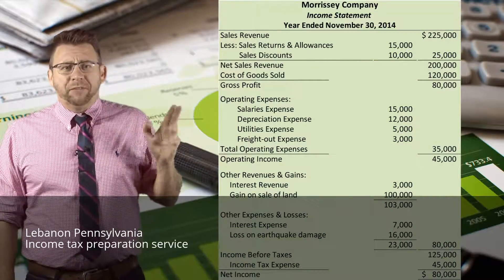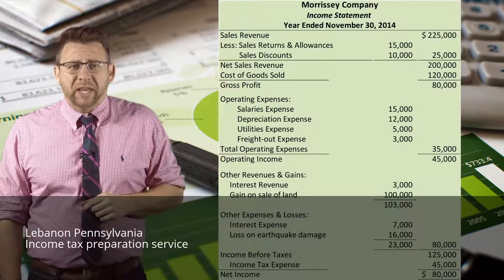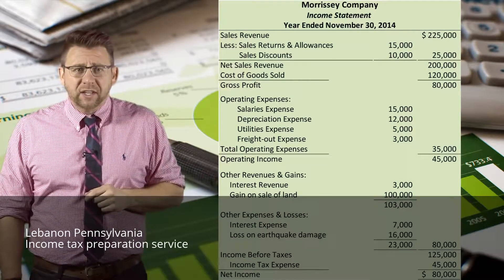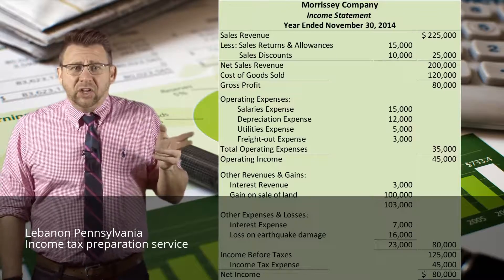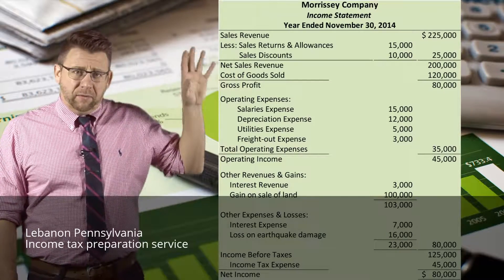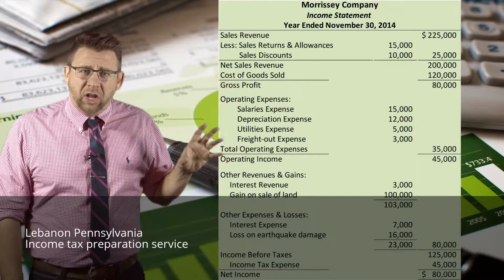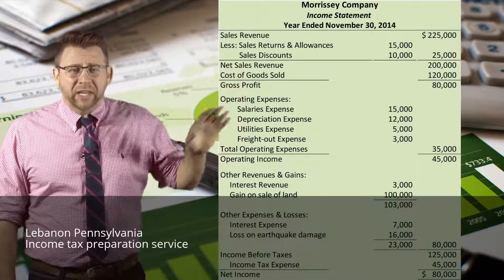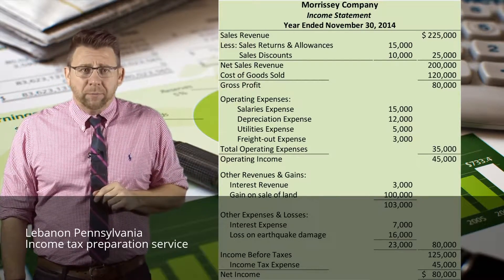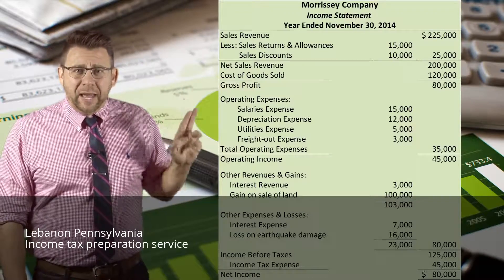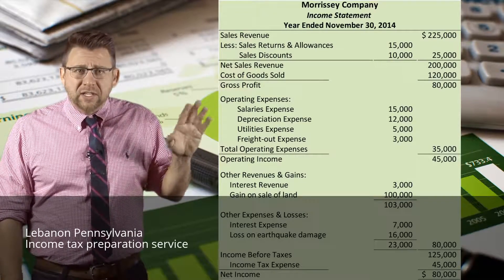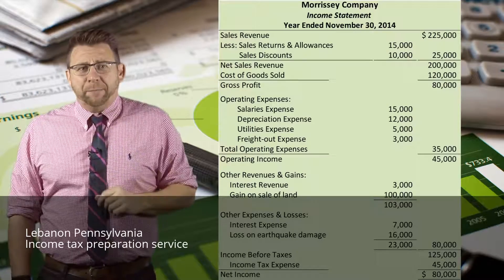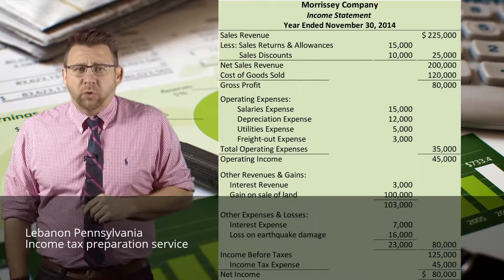Here is an example of the multi-step income statement. You can see the different subtotals listed. Items on an inner column are subtotaled and then that amount is carried to the outer column — again, that does not mean debit or credit, so please remember that. Now let's look at the multi-step income statement more closely.